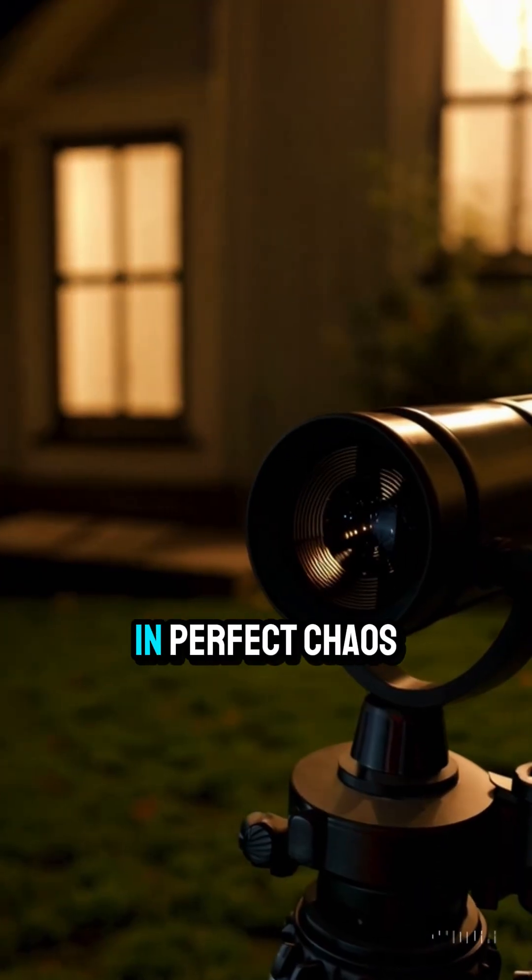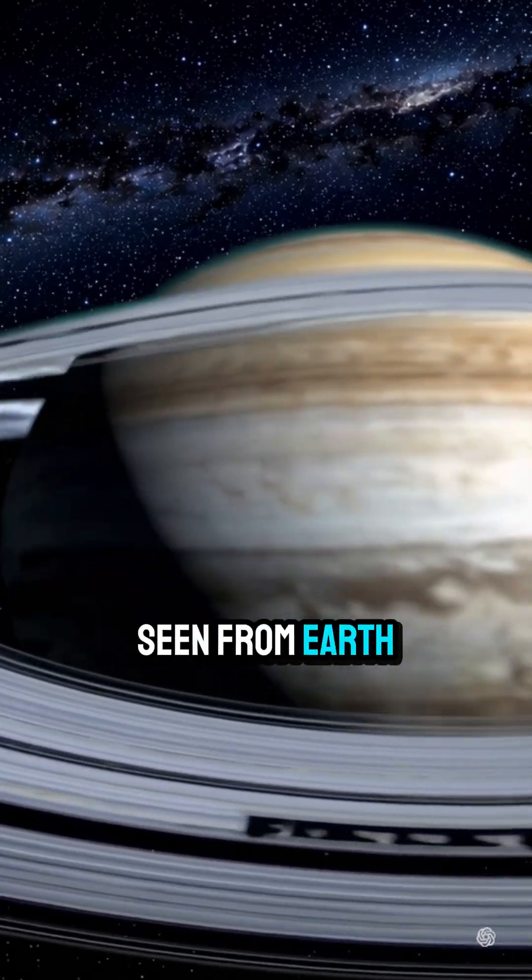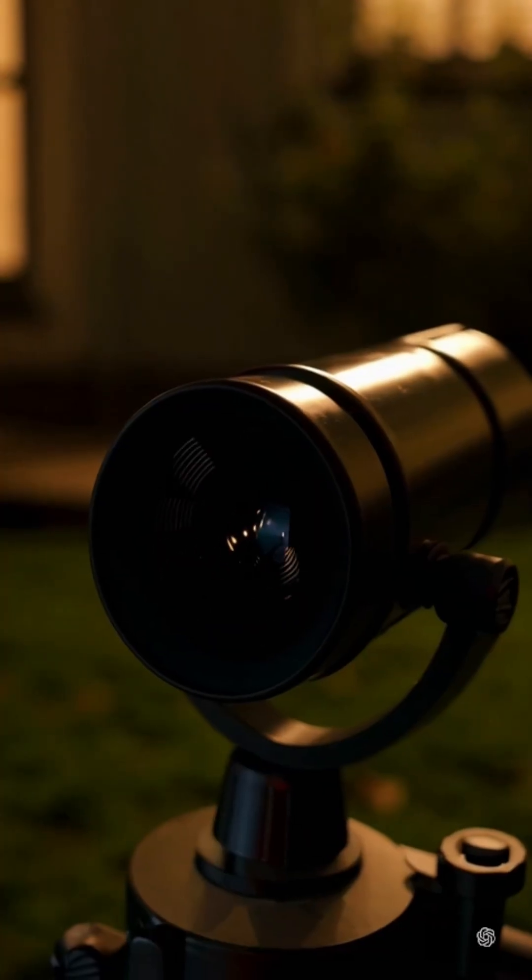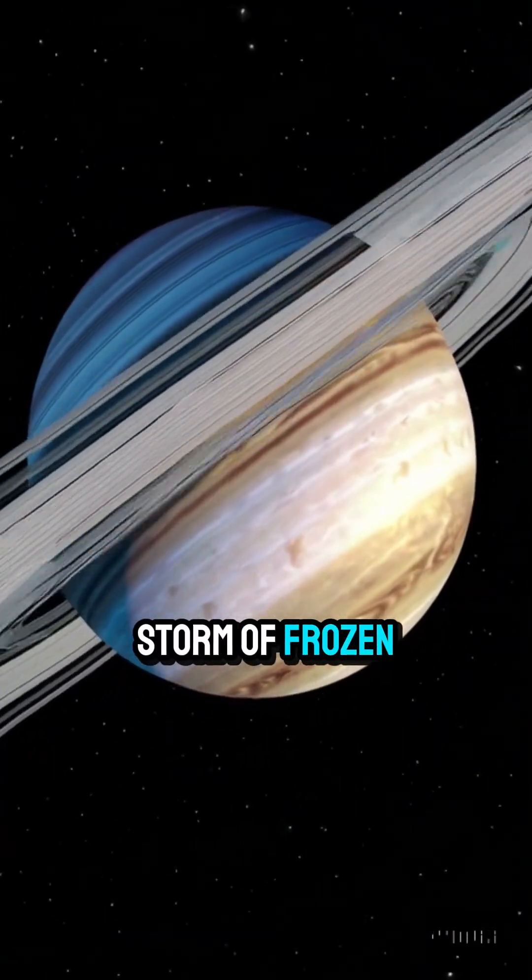Every shard spins in perfect chaos, creating a light show so bright it can be seen from Earth with a backyard telescope. It's not a smooth disk, it's a glittering storm of frozen mirrors.